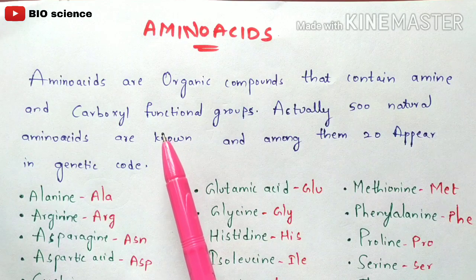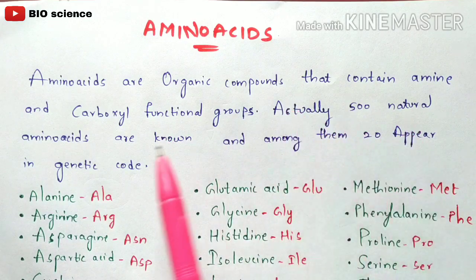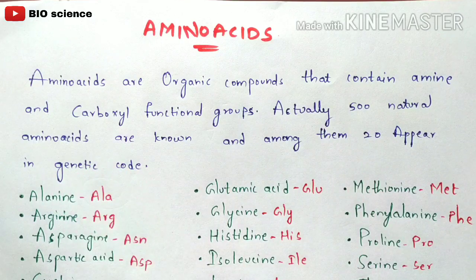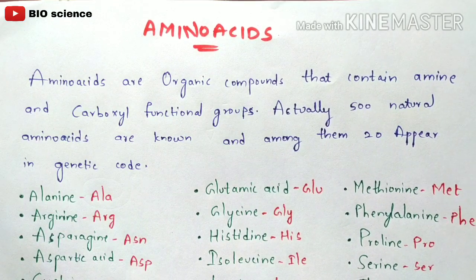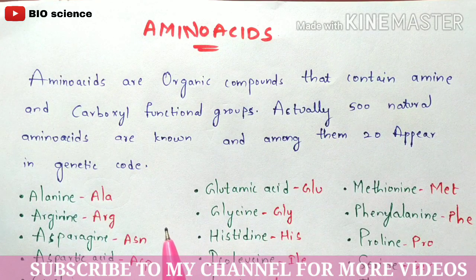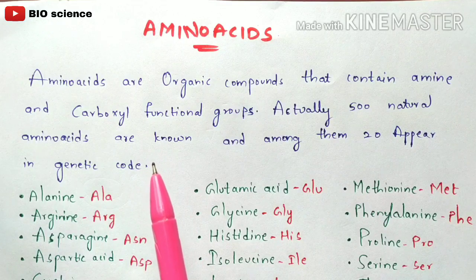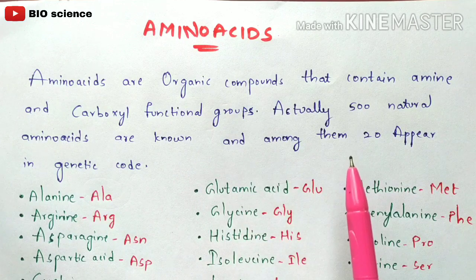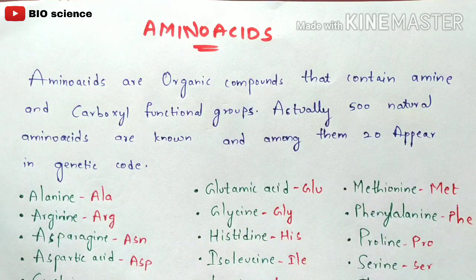Looking at the structure of amino acids, 500 natural amino acids are known. Among them, 20 amino acids can be seen in the genetic code. In the human genome, the total amino acids have been known in the sequence of DNA. Among them, 20 amino acids are currently well characterized, but the remaining ones are unknown. So only 500 natural amino acids are known, and among them 20 amino acids are perfectly known and named.